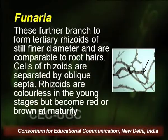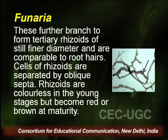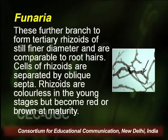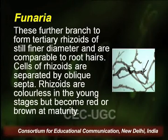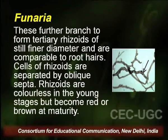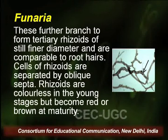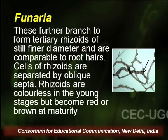The secondary rhizoids further branch to form tertiary rhizoids of still finer diameter, comparable to root hairs. The rhizoidal system in Funaria is thus very elaborate, with branching to secondary, tertiary, and further levels.